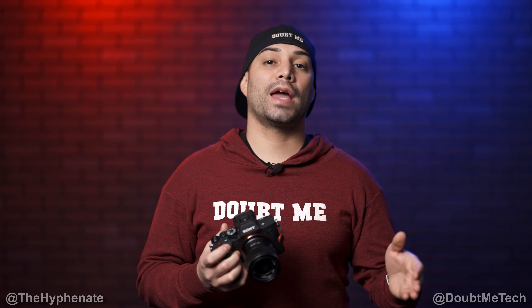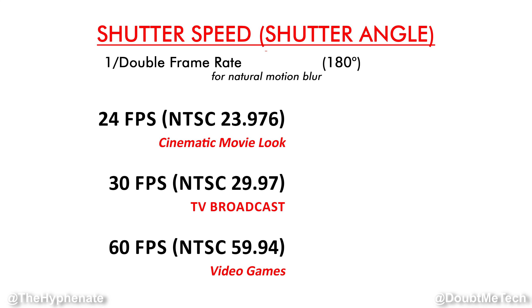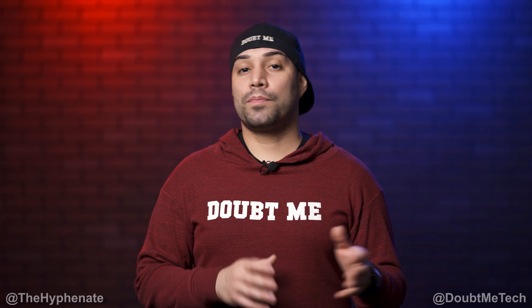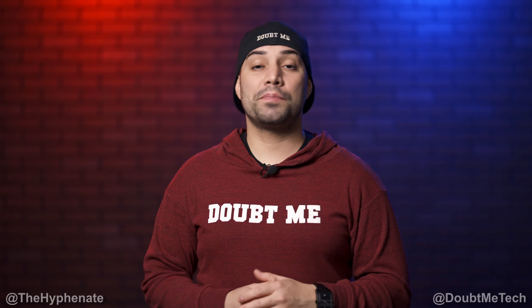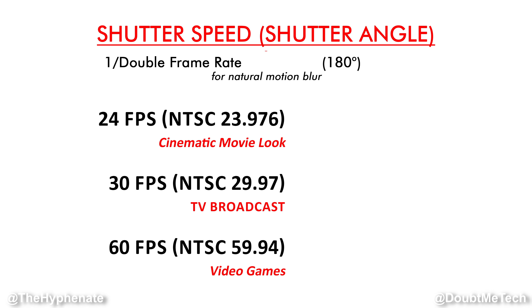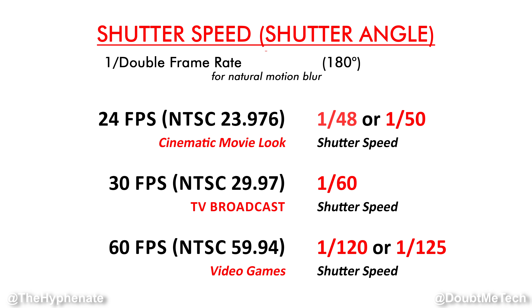Most consumer and prosumer cameras use the term shutter speed; a lot of film cameras use shutter angle, and some cameras allow you to choose between the two. Shutter speed and shutter angle directly correlate with your frame rate — your frames per second — and that's very important. The cinematic look is 24 frames per second (23.976 in NTSC). For traditional broadcast in North America, South America, and Japan it's 30 fps, and most video games are 60 fps or higher. There is a golden rule for video: to capture natural motion blur, set your shutter speed at double your frame rate.